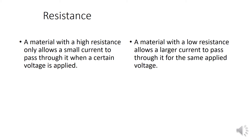A material with a higher resistance only allows a small current to pass through it when a certain voltage is applied. But a material with a low resistance allows a larger current to pass through it for the same applied voltage.